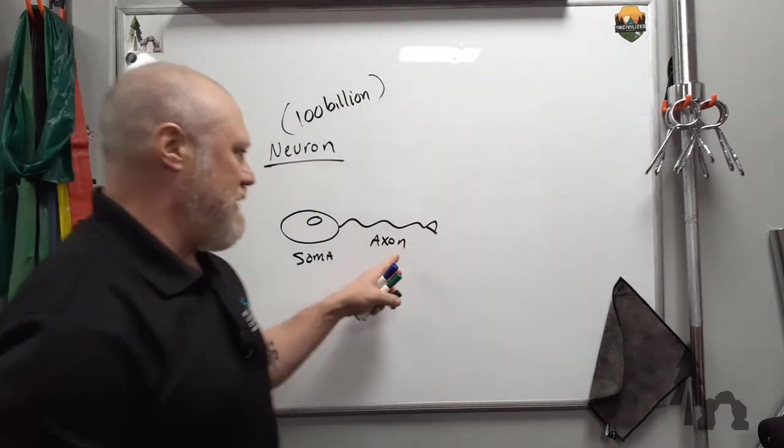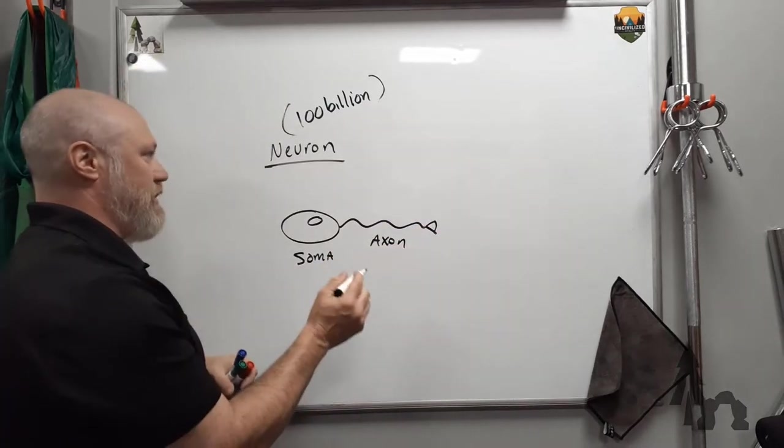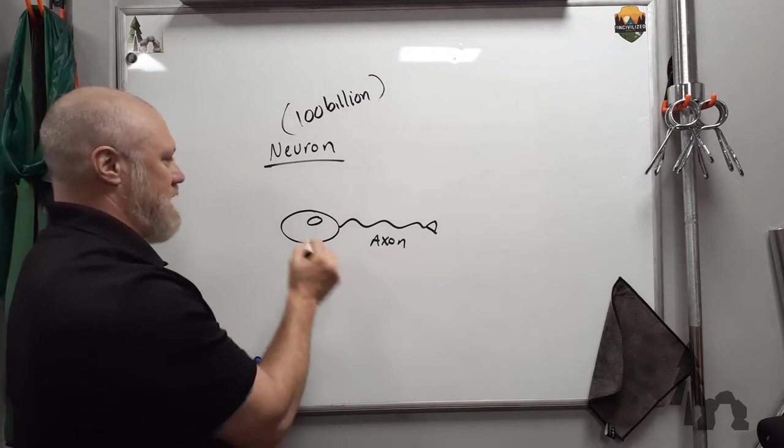And it could be one. It can be hundreds of axons. It could be up to 1,000 axons dividing out, depending on the different type of neuron we're talking about. But basic parts, axon.